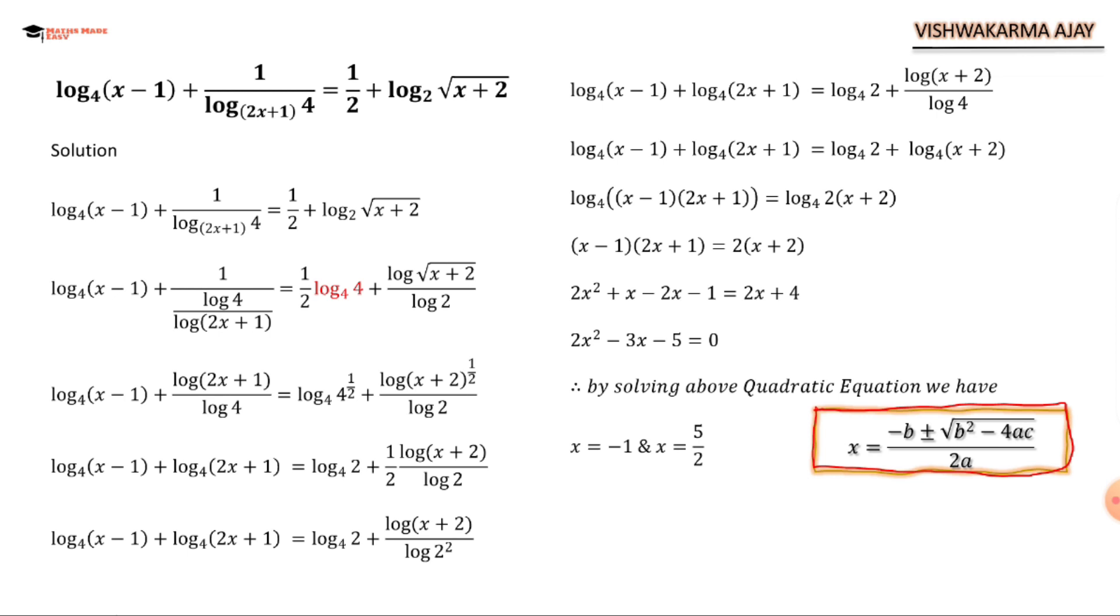Now since we are dealing with logarithmic functions, we cannot use x = -1. Anything negative is unacceptable here. Why? To know why, you have to refer to my other videos based on logarithmic functions, which I am going to put in the i-section. So the final value of x is 5/2.